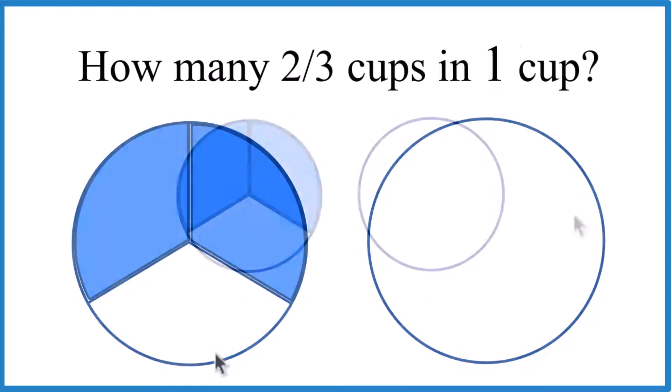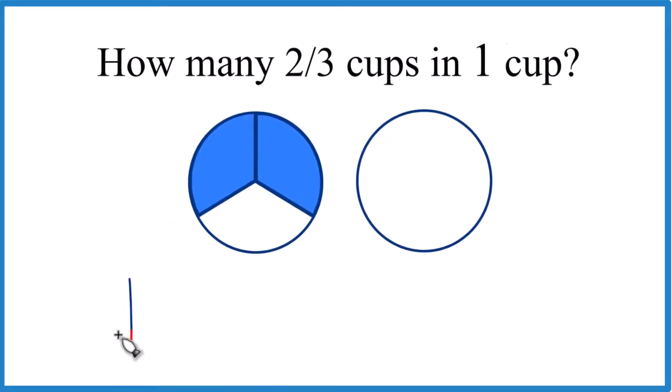Let's do this mathematically. So we have our one cup here and we're gonna see how many times two-thirds goes into that. So one divided by two-thirds.